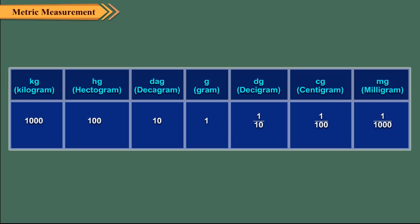The lower units are obtained by adding the prefixes deci, centi, and milli. From the table we can have the following relationship among various units of mass.